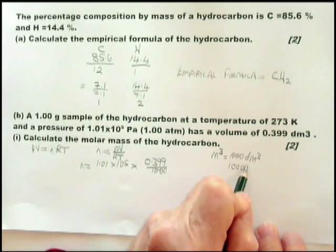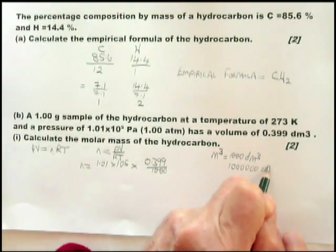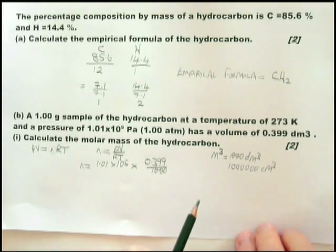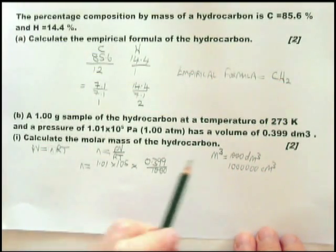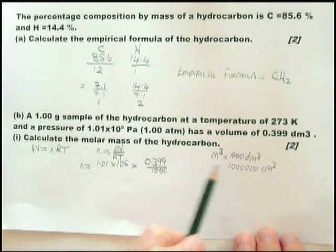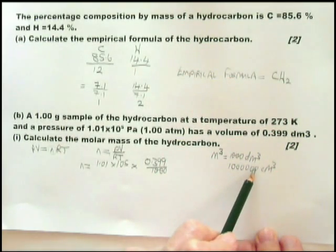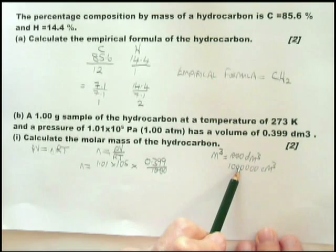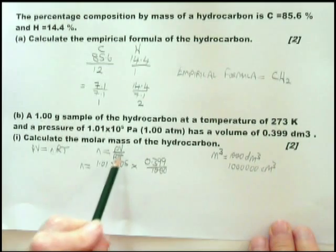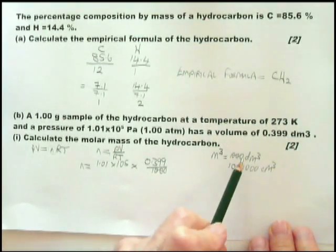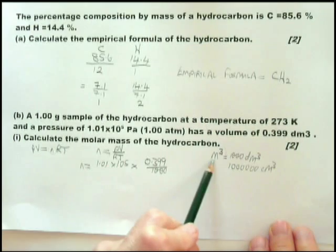So if you are given the volume in decimeters cubed, you divide by a thousand. If you're given the volume in centimeters cubed, you divide by a million. In a different type of question, you might be asked to calculate the volume using this equation.